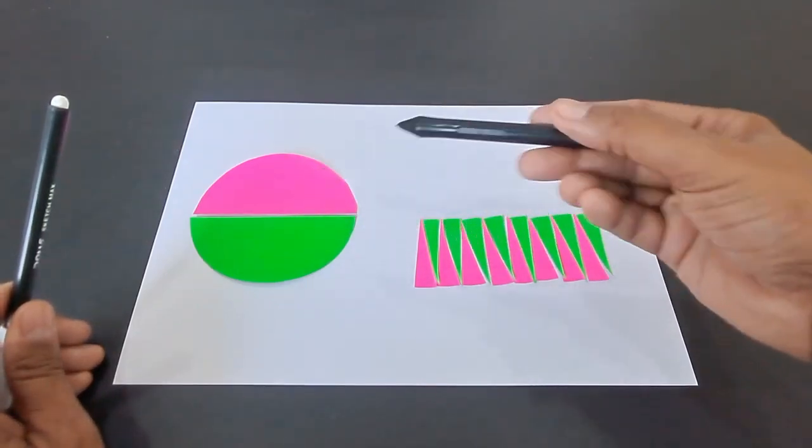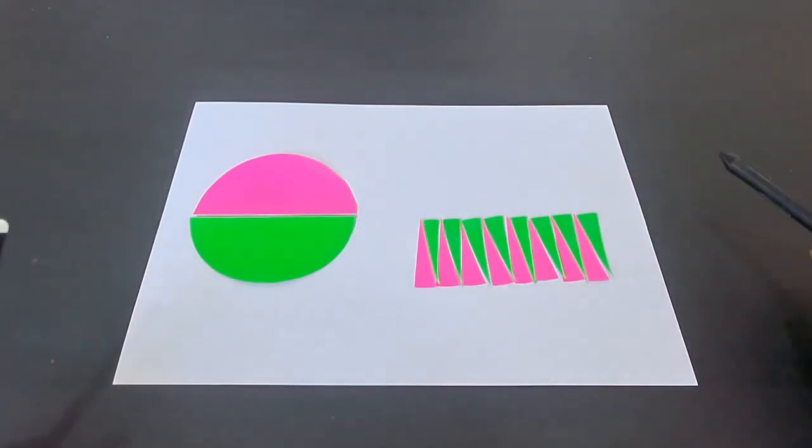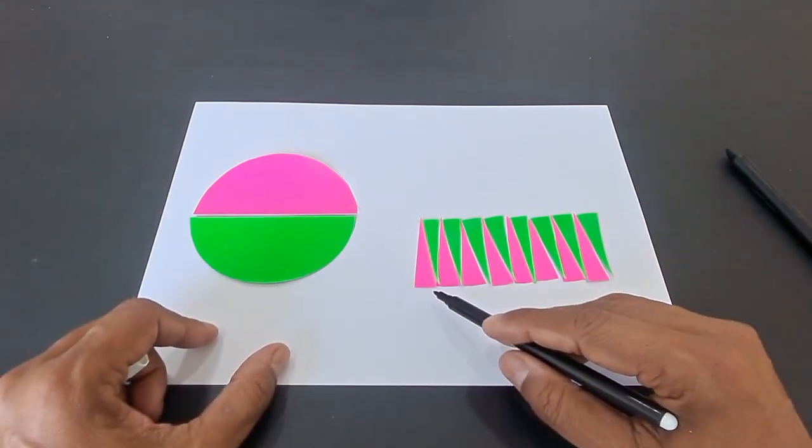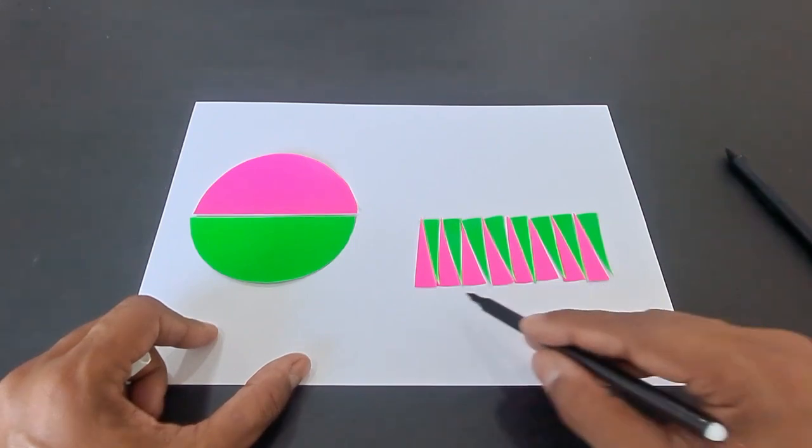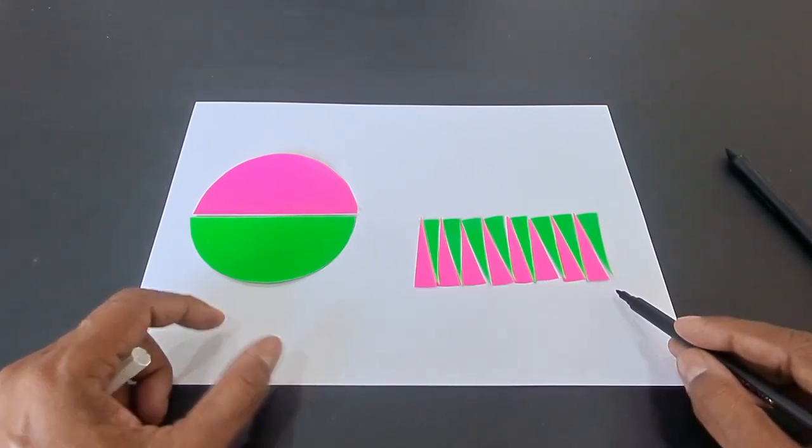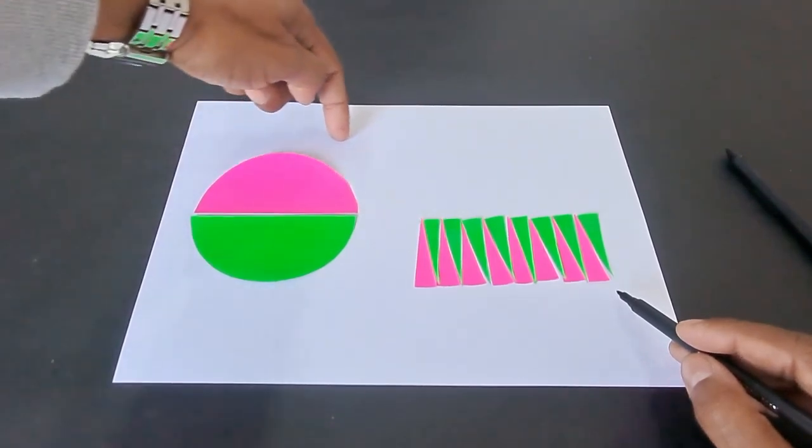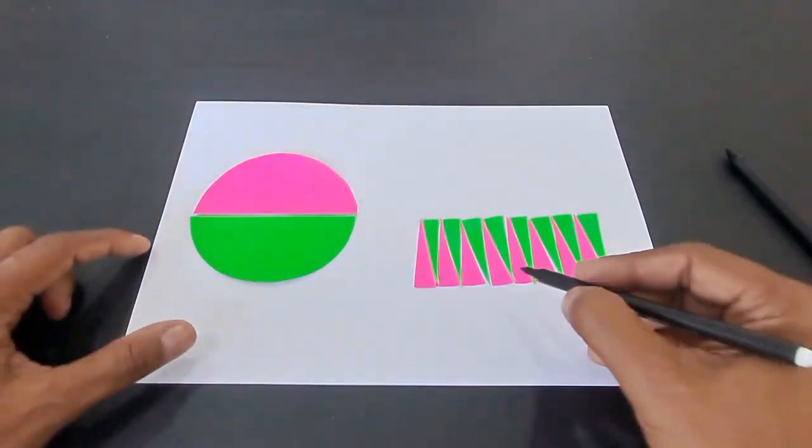You can see 1, 2, 3, 4, 5, 6, 7, 8 - these 8 parts are actually the circumference of the shaded part here, and therefore this is 2πr by 2, that is semi-circumference, which is πr.